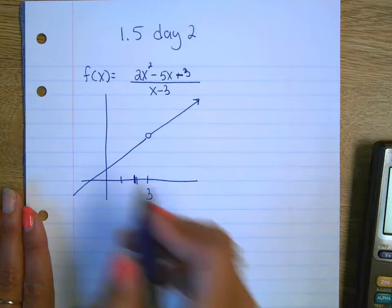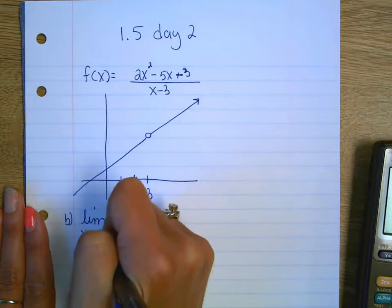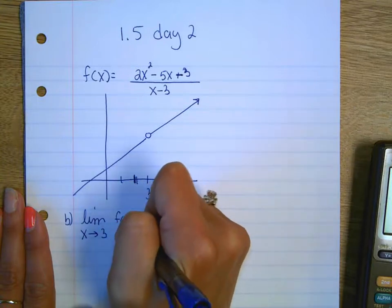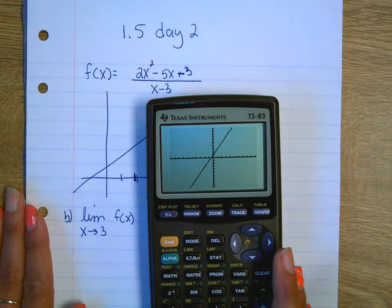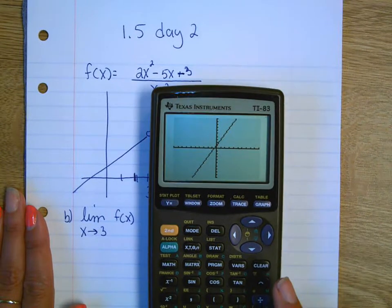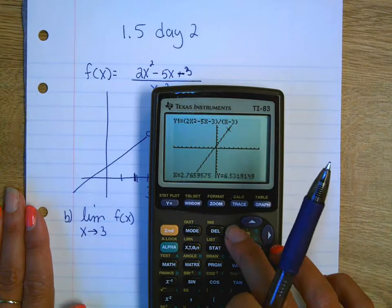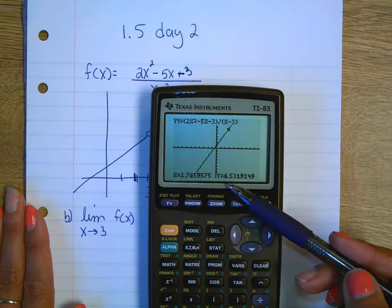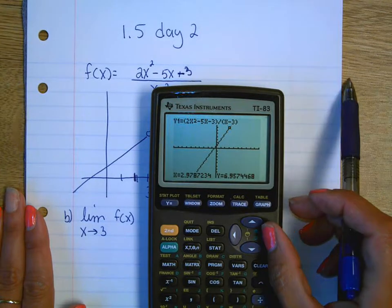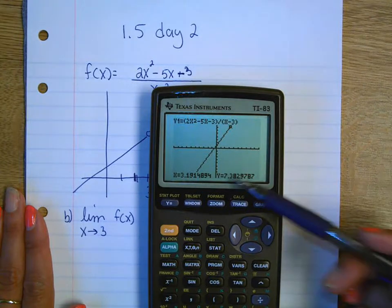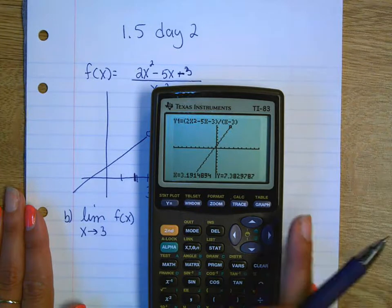I'm going to go to the y equals 2x squared minus 5x minus 3, oops, I forgot my parentheses. The numerator has to be in a set of parentheses, and so does the denominator. x minus 3, I'm going to bring it back to a zoom 6. So I can see it's a linear function, but I know there is going to be a hole at 3.